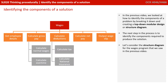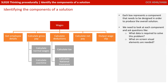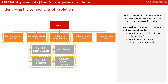In the previous video, we looked at how to identify the components of a problem by breaking it down and creating a top-down modular design or structure diagram. The next step in the process is to identify the components required to produce the solution. So let's consider the structure diagram for the wages program that we saw in the previous video. Each box represents a component that needs to be designed in order to produce the overall solution.